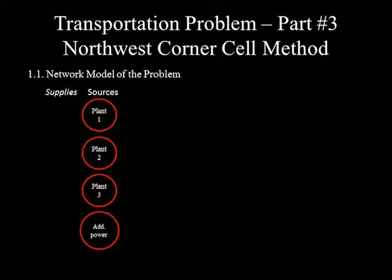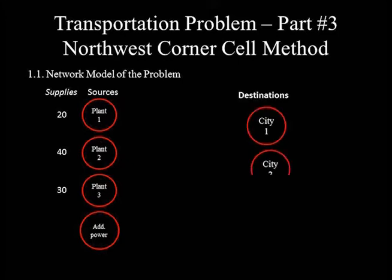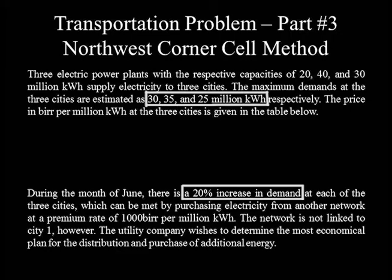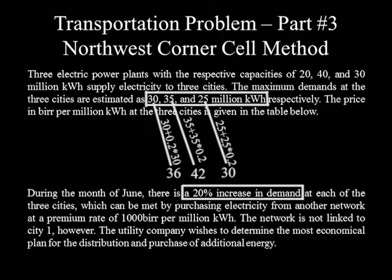The supply from each source is written to the left of the nodes representing that source. Supply from plant one is 20 million kWh, plant two is 40 million kWh, and plant three is 30 million kWh. The three cities are arranged from top to bottom at the right-hand margin. A 20% demand increment in June raises the estimated 30, 35 and 25 million kWh to 36, 42 and 30 million kWh respectively.